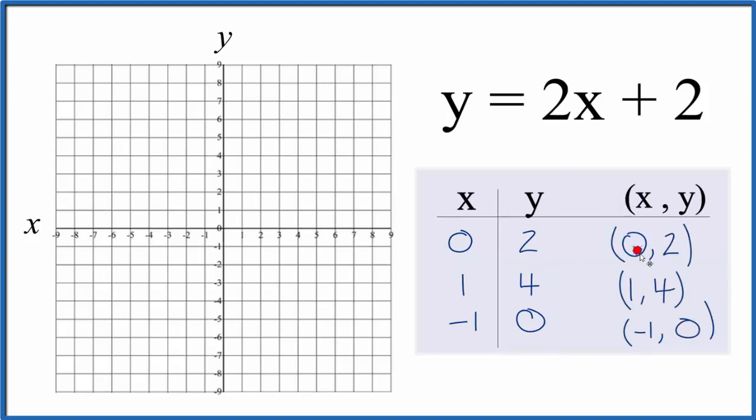These are our points, so now we can graph them. Let's graph x = 0, y = 2, so here's 0 and then y is 1, 2. That's our first point. We have (1, 4), so we go 1 and then up 1, 2, 3, 4. One more point: (-1, 0), so x is -1 and y is 0, it just stays right there.